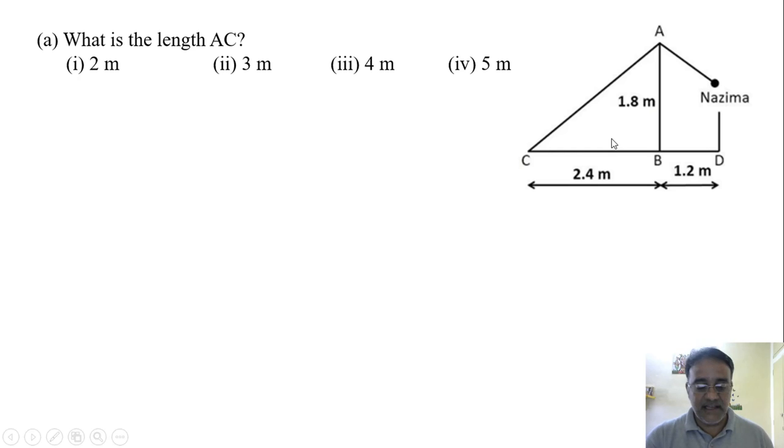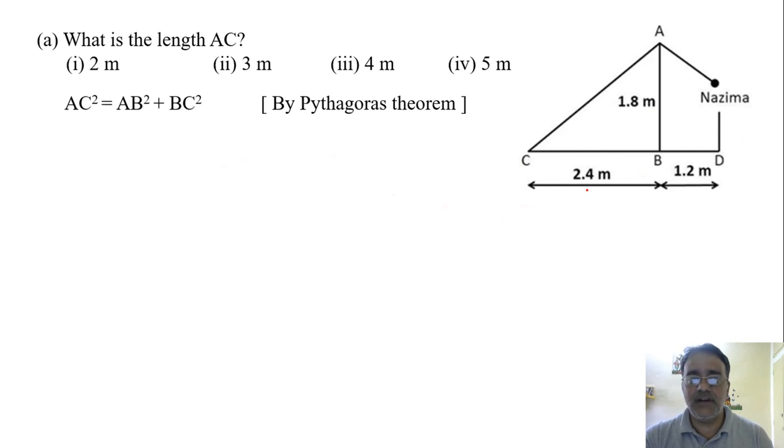So this is the diagram. Here A, B, C is a right triangle, so we can use the Pythagorean theorem in this right triangle. So AC² = AB² + BC². AB square means 1.8² and BC square is 2.4². So 1.8² is 3.24 and 2.4² is 5.76.